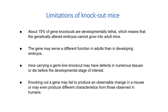Third, mice carrying a germline knockout may have defects in numerous tissues or die before the developmental stage of interest. And fourth, knocking out a gene also may fail to produce an observable change in a mouse, or may even produce different characteristics from those observed in humans in which the same gene is inactivated. For example, mutations in the p53 gene are associated with more than half of human cancers and often lead to tumors in a particular set of tissues. However, when the p53 gene is knocked out in mice, the animals develop tumors in a different array of tissues.